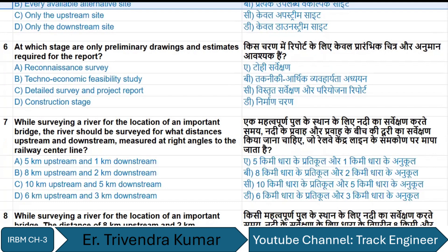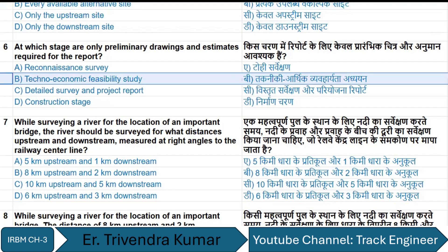The next question: at which stage are only preliminary drawings and estimates required for the report? The right answer is the techno-economic feasibility study — option B.